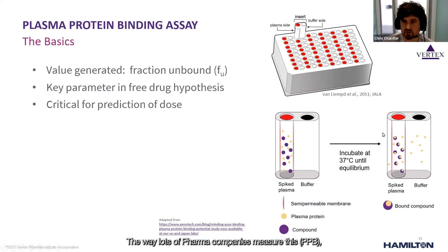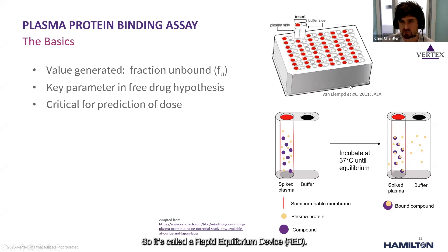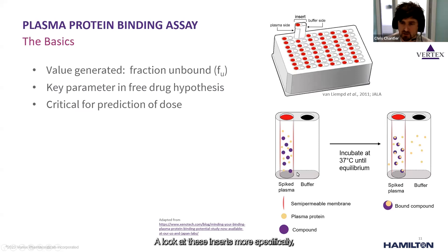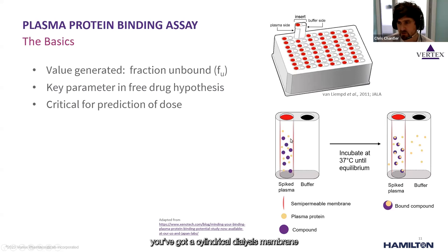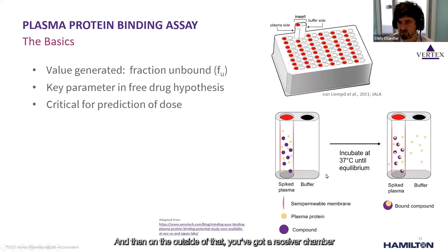The way many pharma companies measure plasma protein binding is with the device shown in the top right — called a Rapid Equilibrium Device, or RED. Looking more specifically at the inserts, on the bottom right you can see a cylindrical dialysis membrane into which you place the plasma and the compound. On the outside of that you have a receiver chamber containing buffer, and then you incubate the assembly.